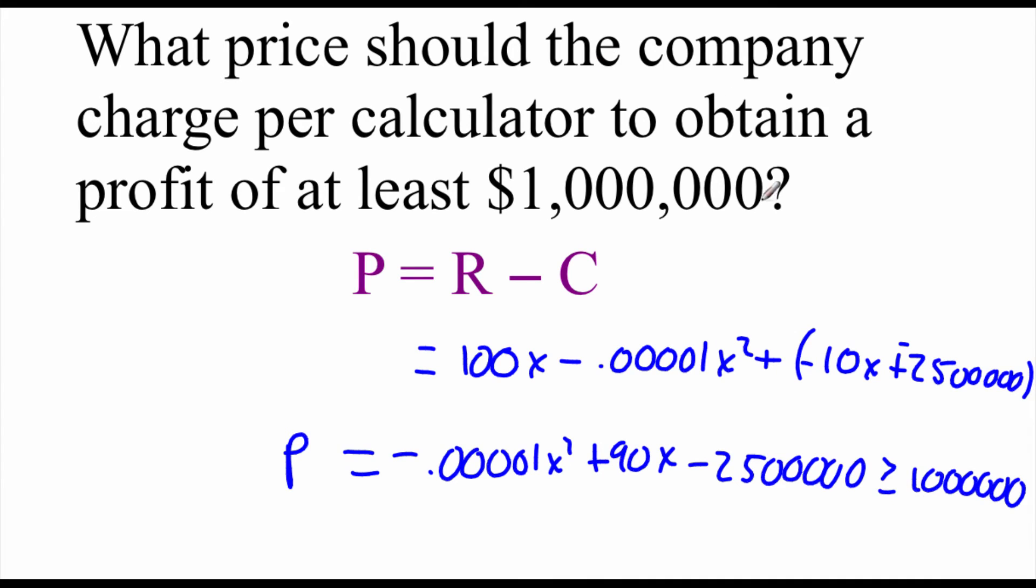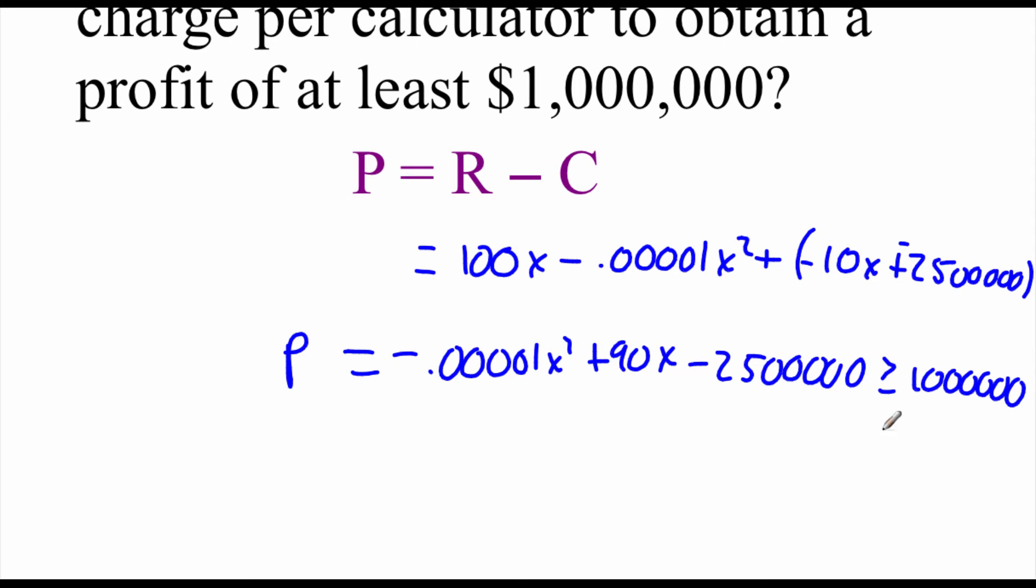Remember, in order to solve this inequality, we need to have a zero on one side. So I'm going to take this $1,000,000 and subtract it over. So then our inequality says negative .00001X squared plus 90X minus $3,500,000. After we subtract that $1,000,000 over, has to be greater than or equal to zero.